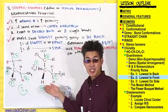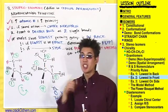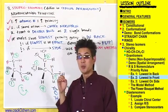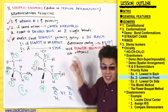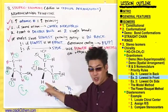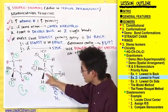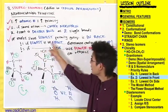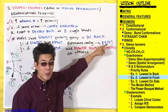Now that we've assigned priorities to these substituents, all we have to do is determine whether they are arranged in a clockwise or counterclockwise arrangement. We need to make sure that the lowest priority group is facing the back. Is it in this case? No, it's not. The lowest priority group — the hydrogen — is actually pointing to the front, as indicated by this solid wedge.